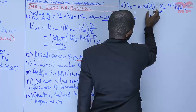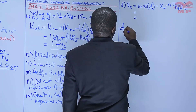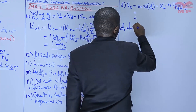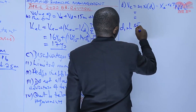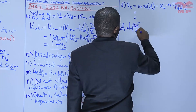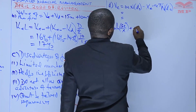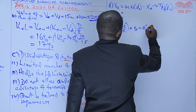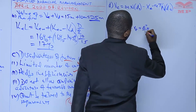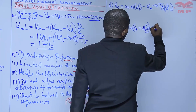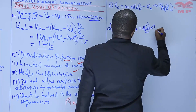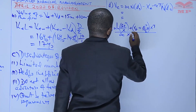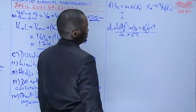First of all, we are going to calculate D1. We know the formula for D1 is equal to the natural log of ST over exercise price, plus the risk-free rate, plus the variance divided by 2, then we multiply this by T, divide by the standard deviation times the square root of time.